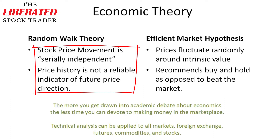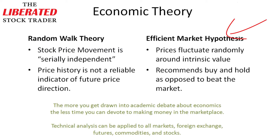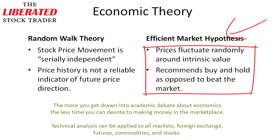In terms of the efficient market hypotheses, that talks around the area that prices fluctuate randomly around an intrinsic value. However, when we see the boom and bust scenarios that happened in 2008, 2009, but also in 2000, in 1987, and in the early 70s, you see that prices don't fluctuate randomly around an intrinsic value. There are so many factors in the marketplace that can't be accounted for in modern economic theory, so it holds very little bearing in the actual market itself.